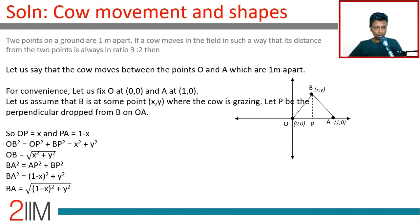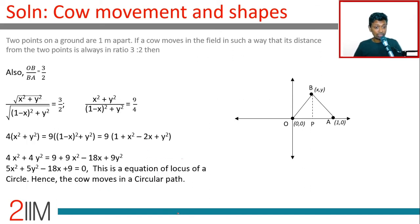Square root of x square plus y square by square root of 1 minus x the whole square plus y square equals 3 by 2. What do we do? Square both sides. x square plus y square by 1 minus x the whole square plus y square is 9 by 4.